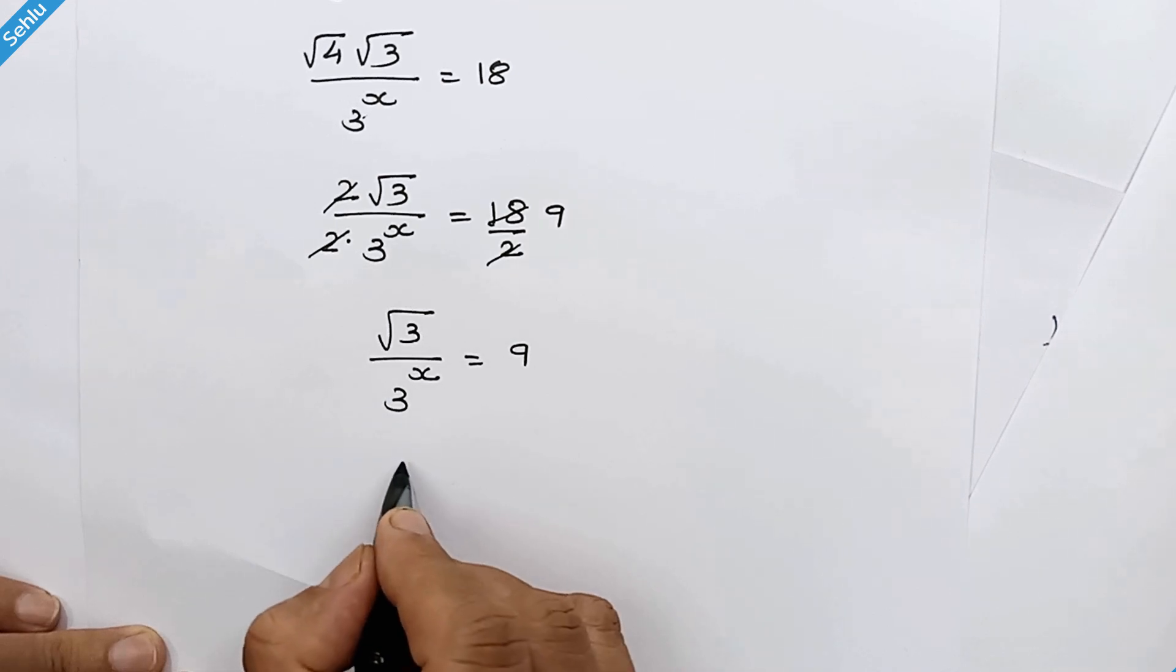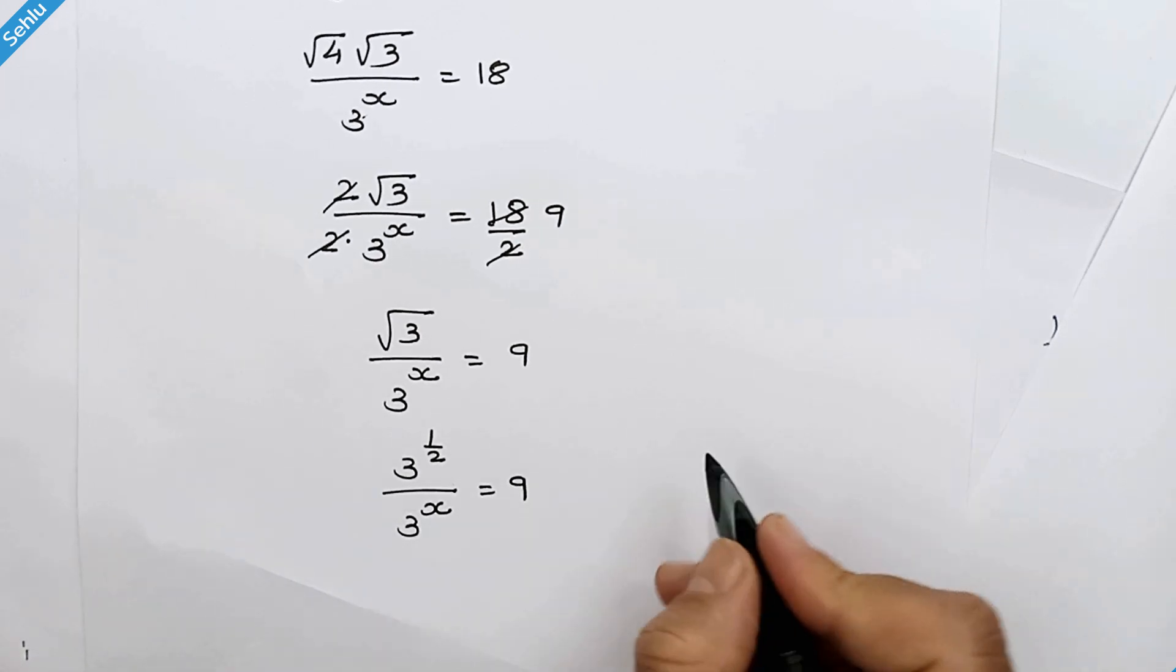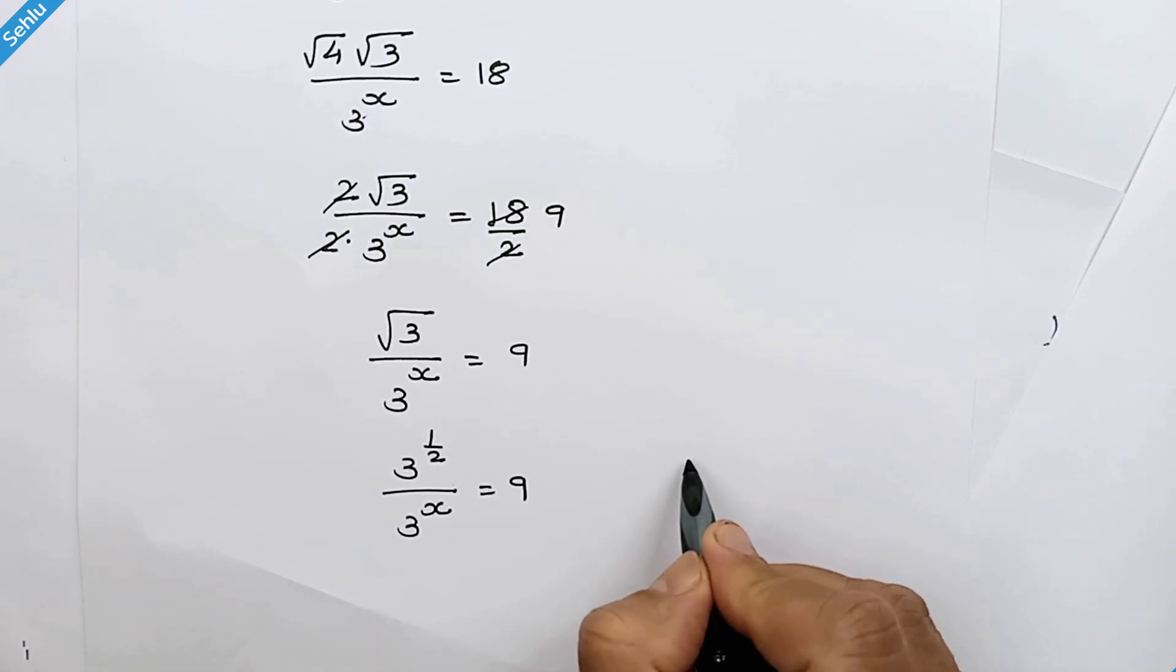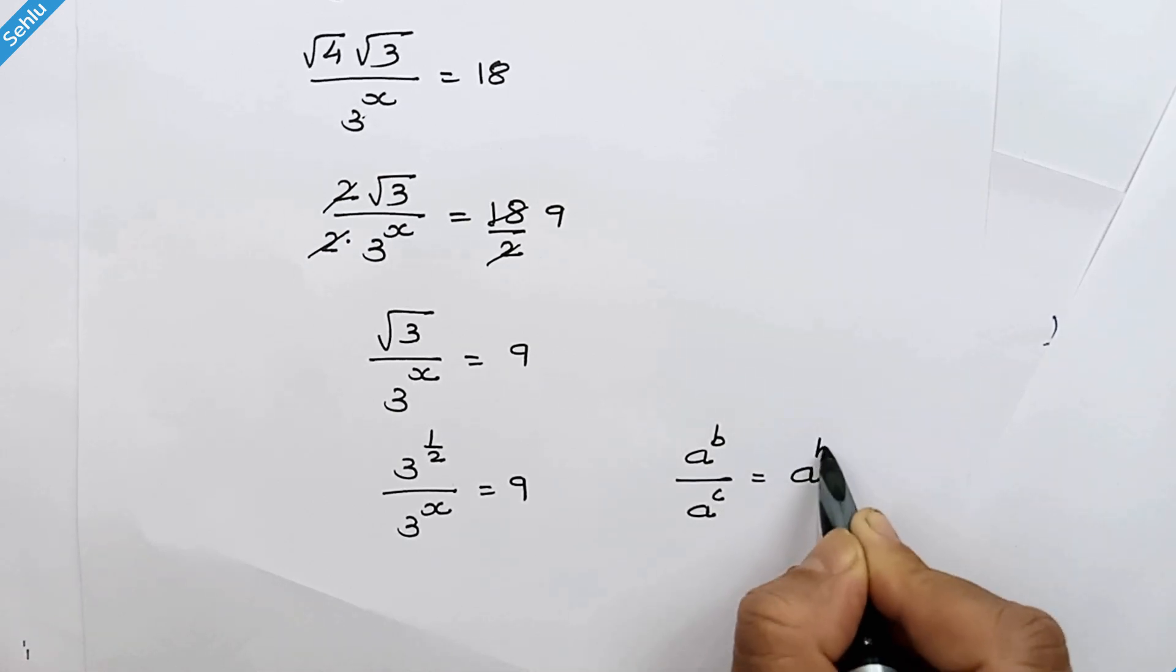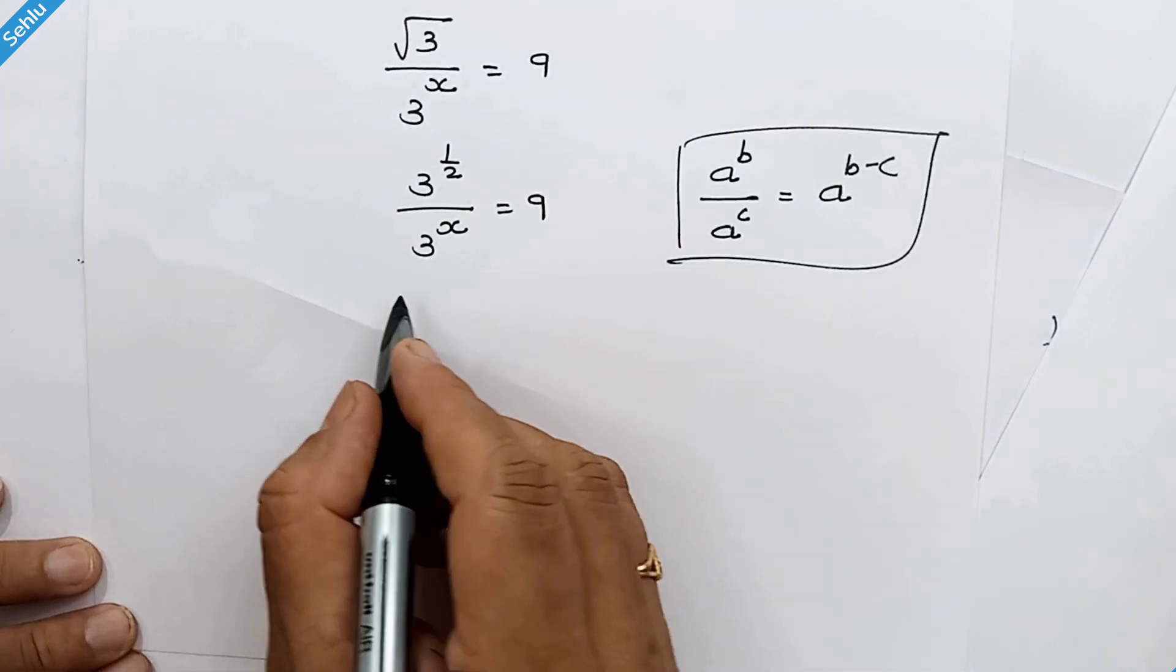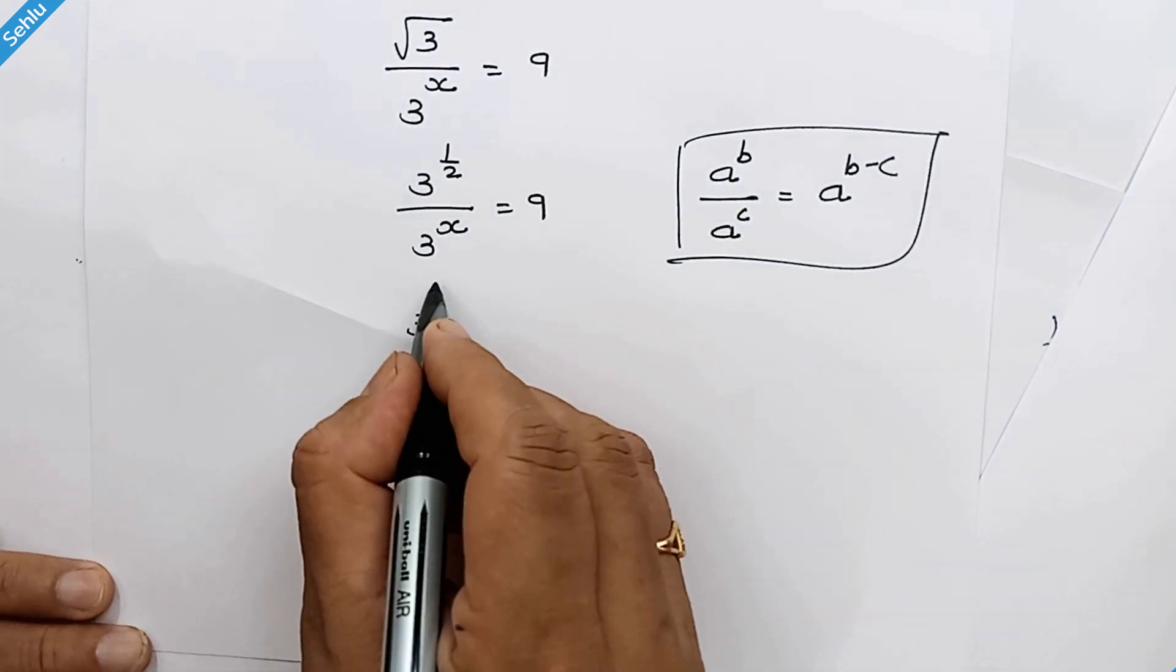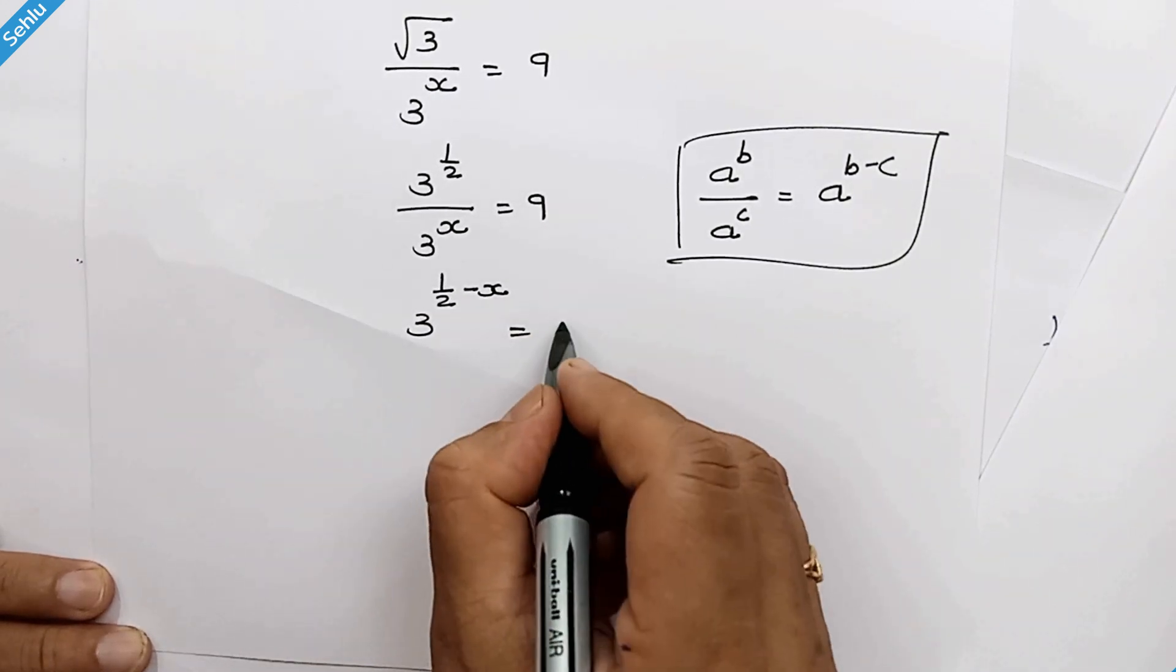Now square root 3 can be written as 3 to the power 1 over 2. Now in the next step we will remind the rule: when we have a to the power b over a to the power c, then it can be a to the power b minus c. So it will be 3 to the power 1 over 2 minus x, and 9 is 3 square.